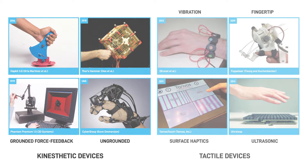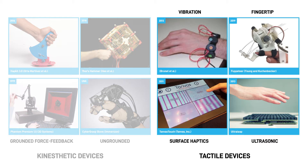Tactile devices primarily stimulate the skin. Examples include your mobile phone with vibration notifications or a bracelet with multiple vibration actuators. Fingertip devices that press against or stretch your skin to provide contact information. Surface haptic devices that can render friction and texture on a touch screen. And mid-air devices that stimulate the hand by using ultrasound beams.